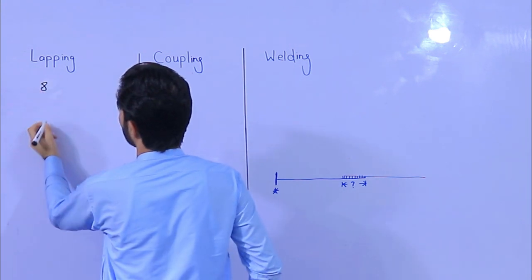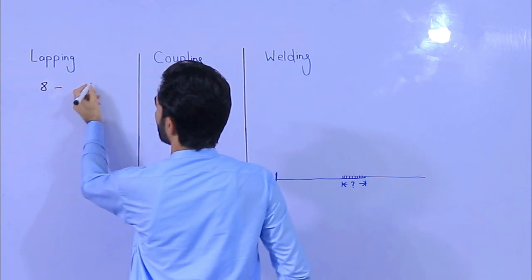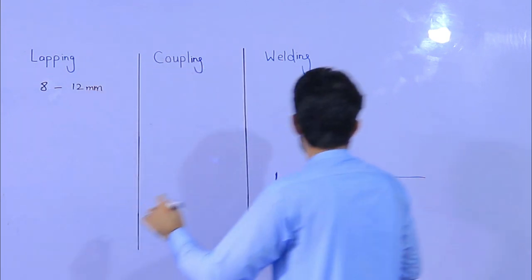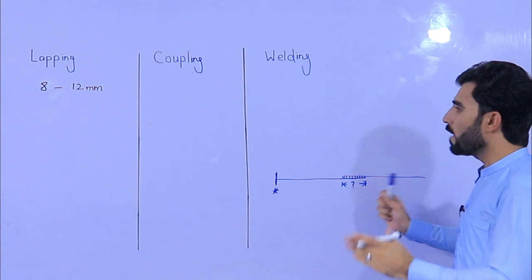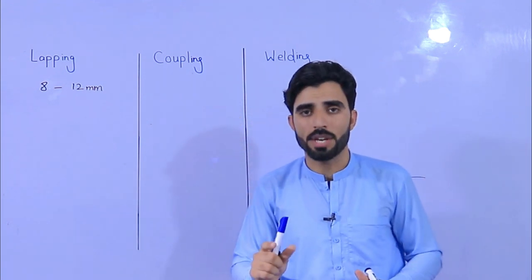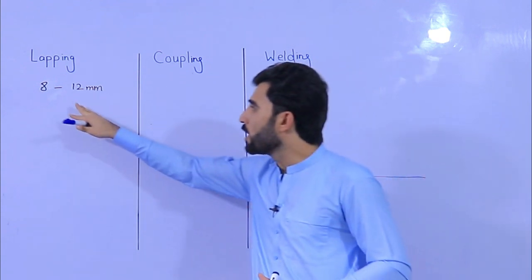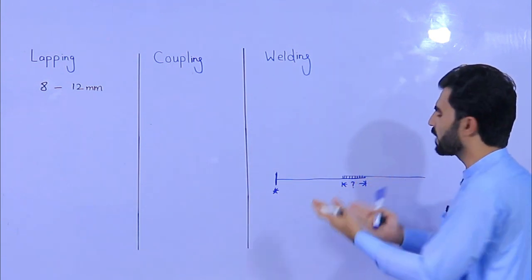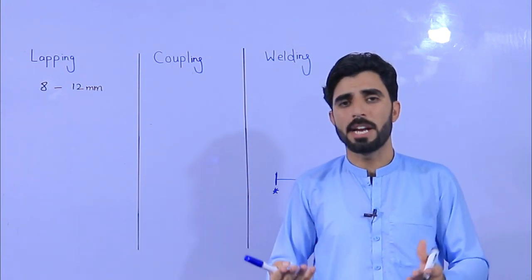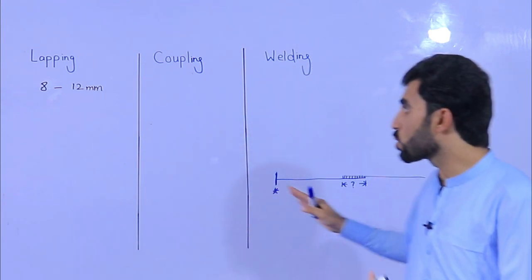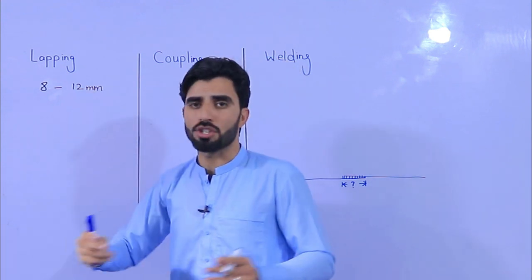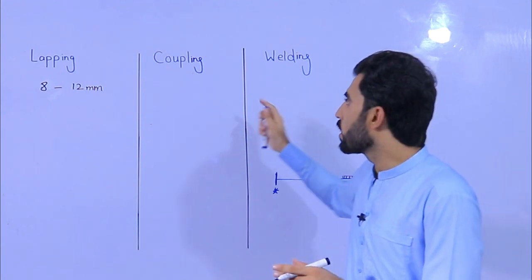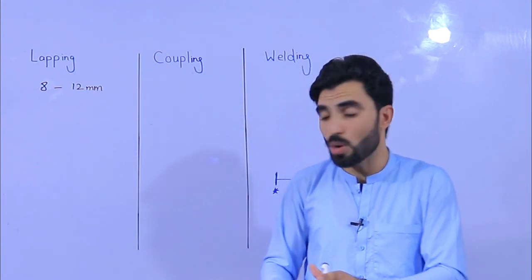For 8mm to 12mm diameter, you should use lapping length. If you buy a coupler for this size, it will become over-cost. For this diameter range, we don't need a large amount of extra steel — the lapping length is maximum about 1.5 meters and minimum 30 inches. Therefore, from 8 to 12 millimeter, I recommend you do not use the coupler method because it will become over-cost.